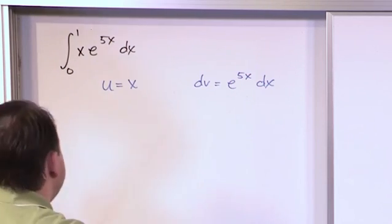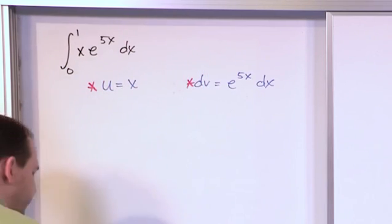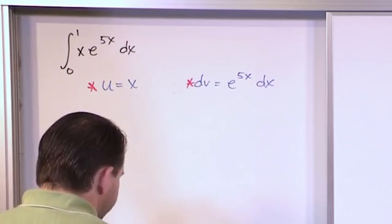So we already have two pieces of information required to do integration by parts. We have these two pieces and now we need to use them to calculate the other two pieces.